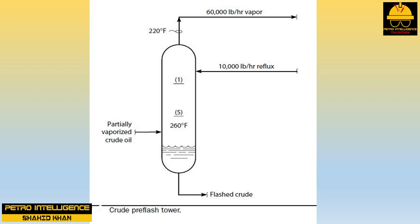But what happened to the sensible heat content — the heat represented by the temperature of the vapors leaving the tower? As the vapor is cooler, the sensible heat content decreased. Where did this heat go? A small part was picked up by the extra liquid draining from the top tray (the extra reflux), but the liquid flow is too small to carry away much heat. The main reason the vapors leaving the top tray are cooler is vaporization — the sensible heat content of the flowing vapors is converted to latent heat of vaporization.